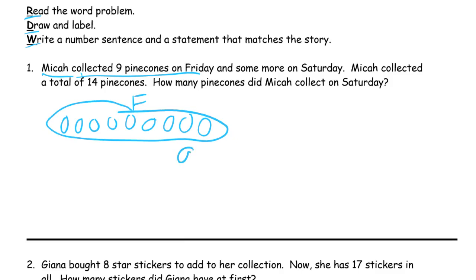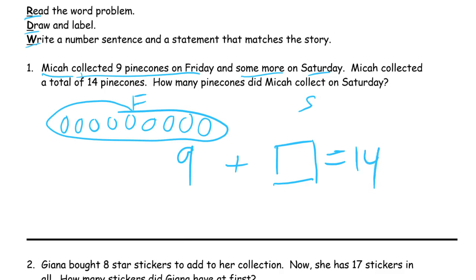There's nine of them. Some more on Saturday — I don't know how many more, so that's what I don't know. But I do know that the total is going to be 14. So all I have to do is draw more until I have 14 pine cones and then write down how many more I had to draw.